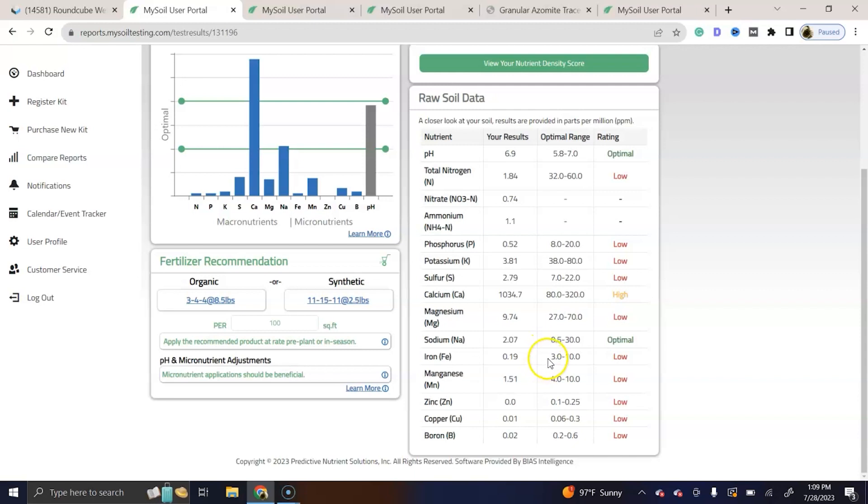And at this point, we now know what area, actually everything but calcium that we need to amend, calcium and sodium. So we'll be moving forward with amending our soil. Once we get all of that purchased and decide what we're going to use, we'll let you guys know.